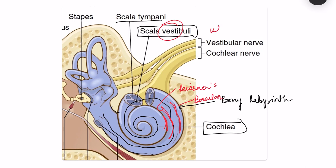How I remember? Up — UV — U and V come together in letters. So up is scala vestibuli. The lower part, bounded above by the basilar membrane and below by the bony labyrinth, is the scala tympani. And in between these two compartments there is another compartment — the scala media.